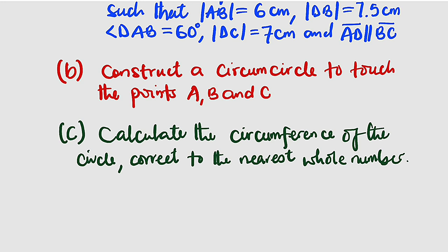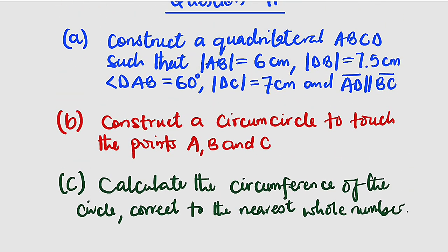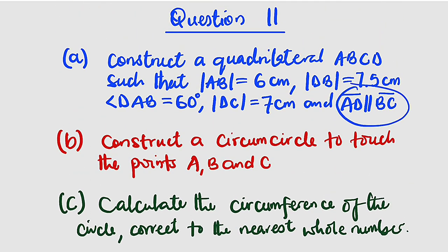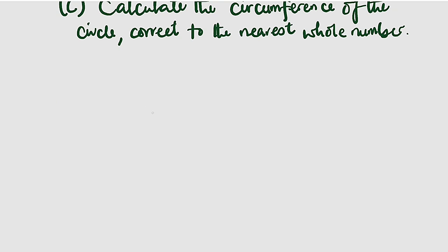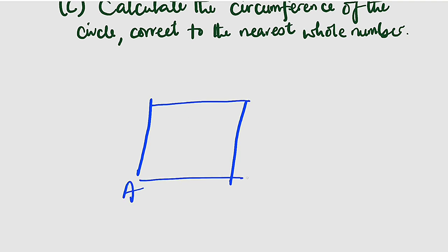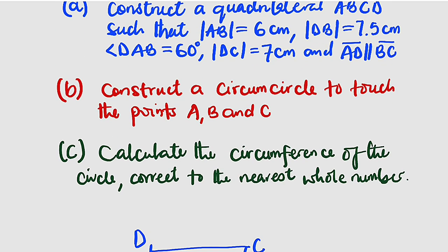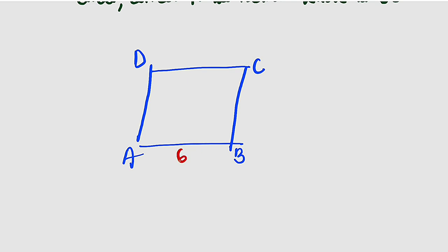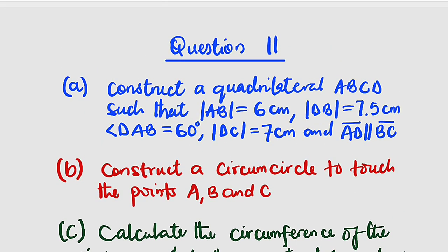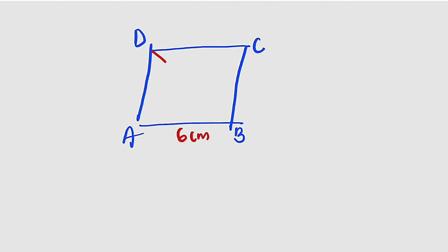Let's get started. The first thing you need to do before you start construction is the rough work. They say it is a quadrilateral, but you should notice that these two lines are parallel. So if we have something like this — label A, B, C, D — line AB is 6cm, and line DB is a diagonal line of 7.5cm.